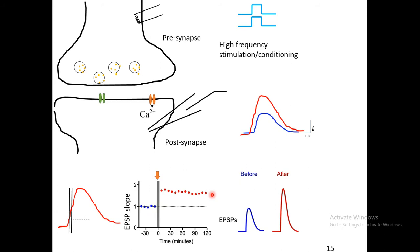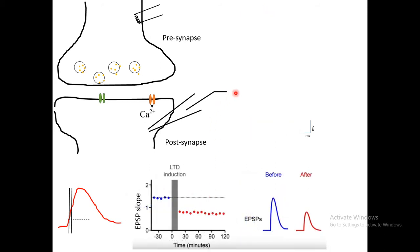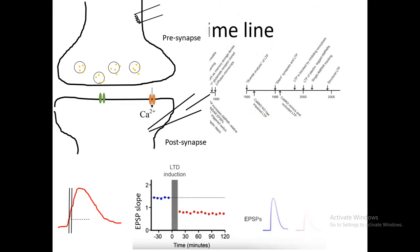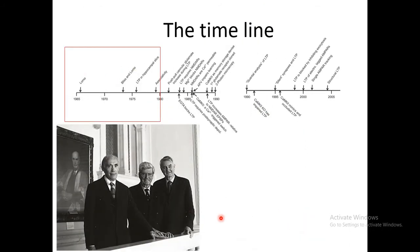Just the opposite is long-term depression. Here you record a post-synaptic response, then give low-frequency stimulation — 10 Hz lasting for 10 minutes. After that, the same current injection yields a reduced amplitude of the post-synaptic potential. Plotting the slopes over time, you can see that after LTD induction the slopes are lower than baseline, suggesting that synaptic strength can be altered.